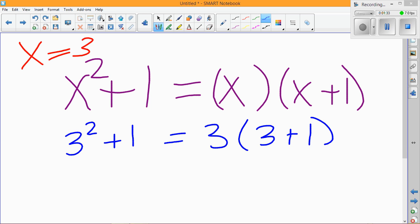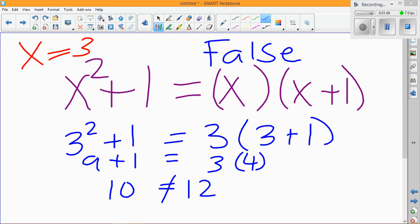If I compute this, 3 squared is 9, and 9 plus 1 is 10. And 3 plus 1 is 4, and 4 times 3 is 12. So we can immediately see that 10 is not equal to 12, so we can tell that this statement is false.